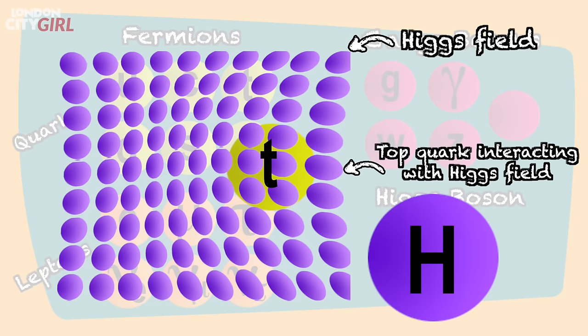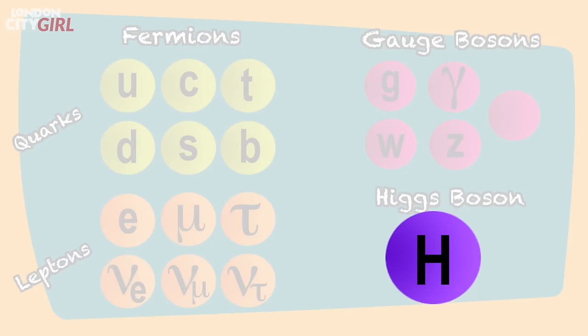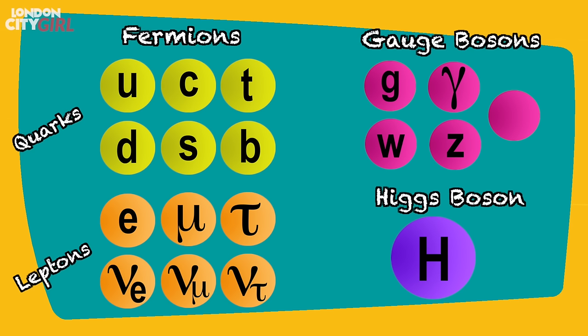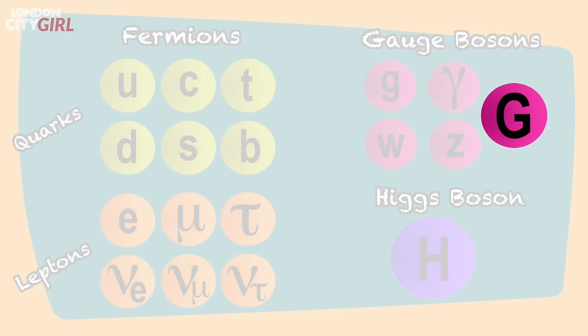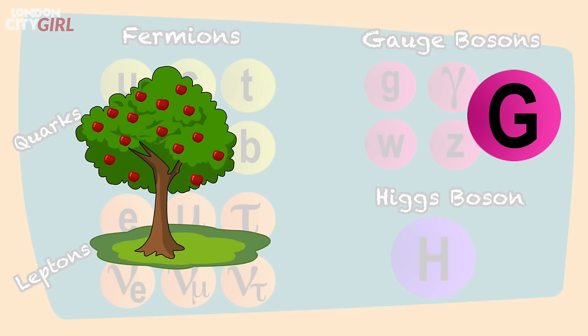For example, the top quark is interacting with the Higgs field and this is what is giving the top quark its mass. And the final boson we turn our attention to is the graviton, which is a hypothetical particle that mediates the gravitational force.